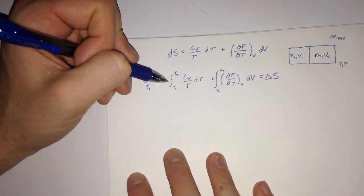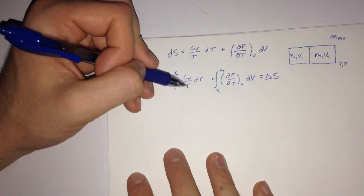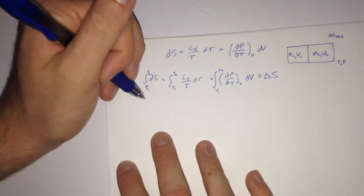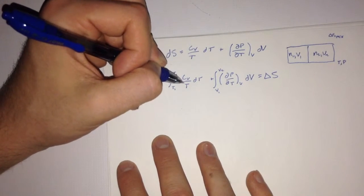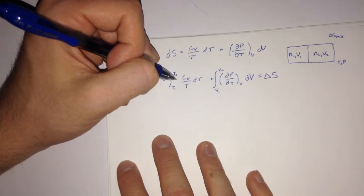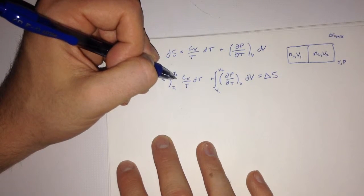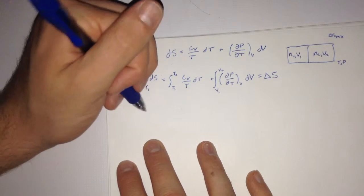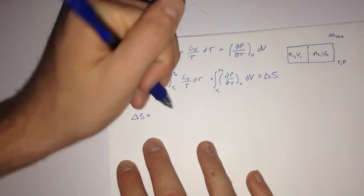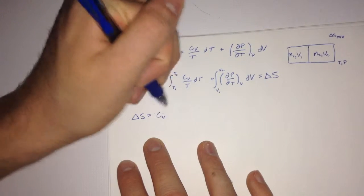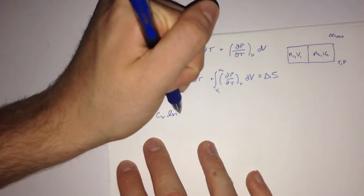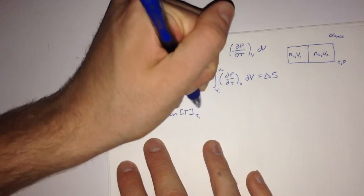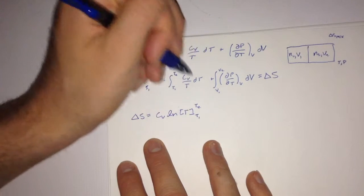Another thing that we notice is that will leave us with 1 over t dt. And we know that taking the integral of that is equivalent to ln of that variable. And we're assessing it from initial to the final state.